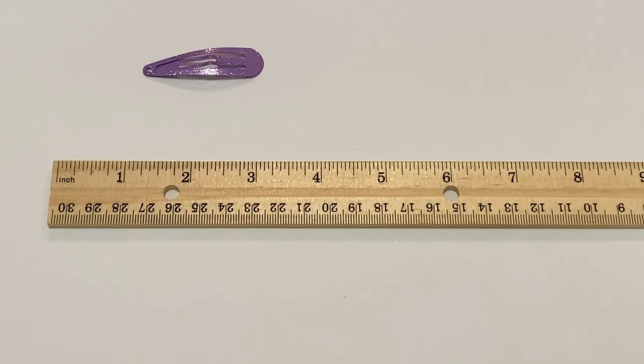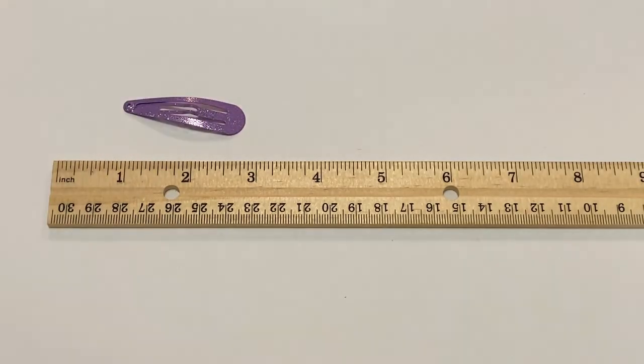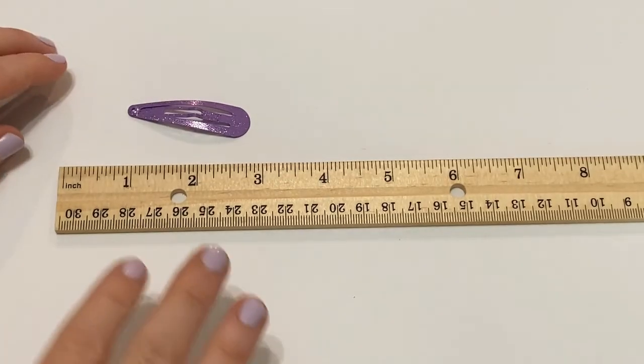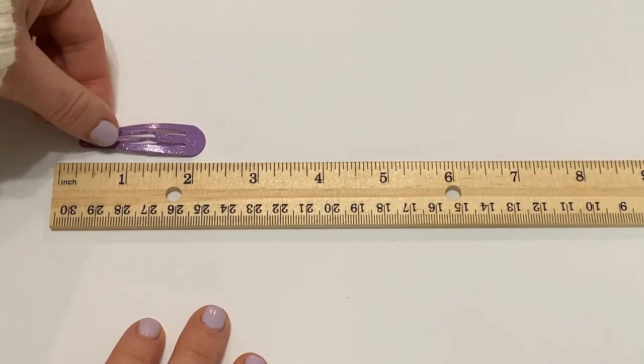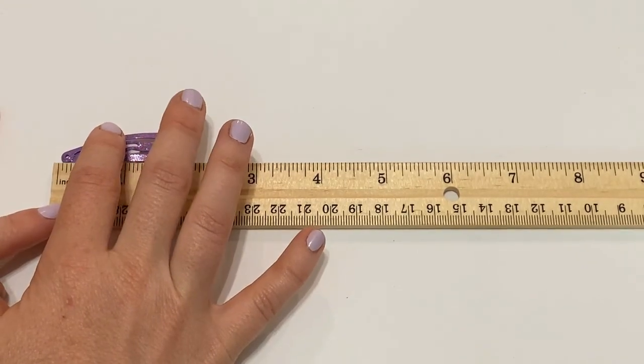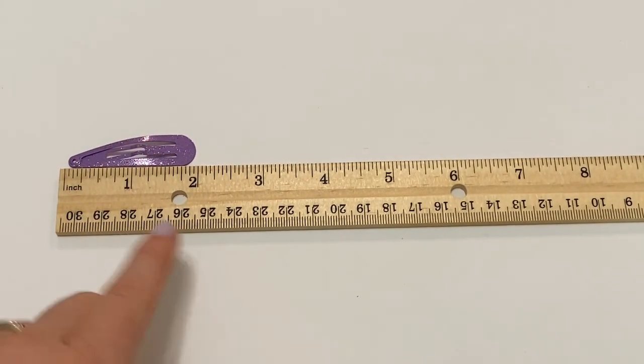Let's try one last measurement. This time we're going to measure this sparkly purple hair clip. Again I'm going to make sure it's lined up with the zero or in this case the very first marking here and I'm going to look here and I can count.